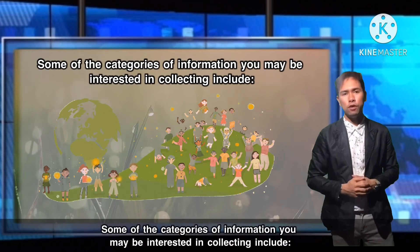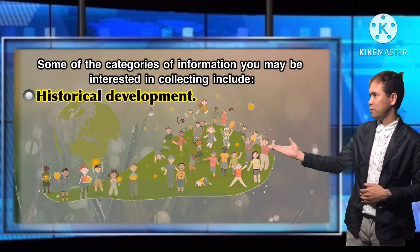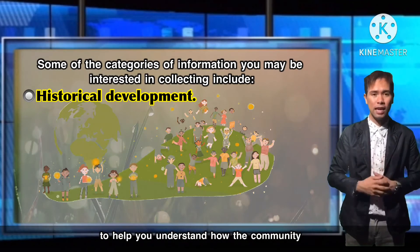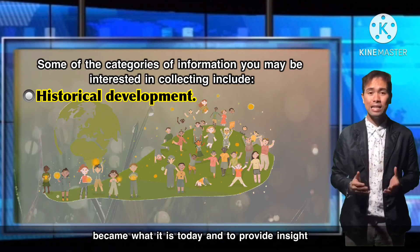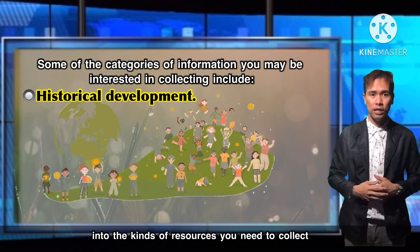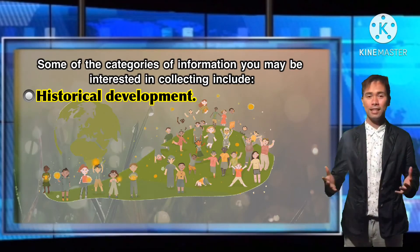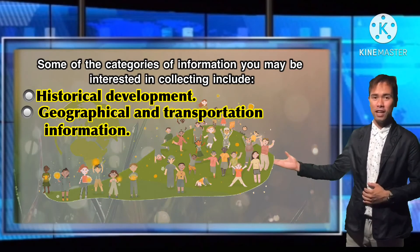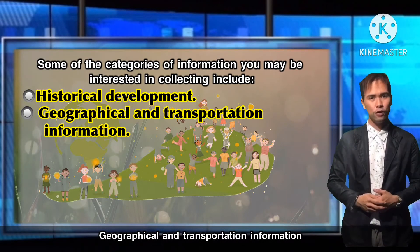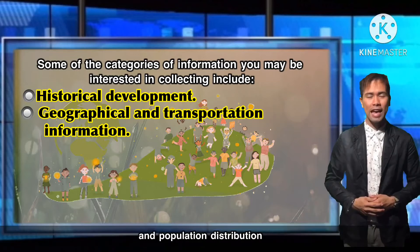Some of the categories of information you may be interested in collecting include: Historical Development — to help you understand how the community became what it is today, and to provide insight into the kinds of resources you need to collect and those that you need to work out. Another category is Geographical and Transportation Information — to help you understand your community's growth patterns and population distribution.